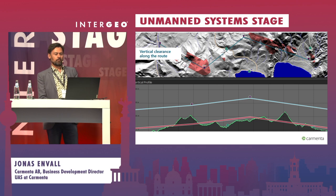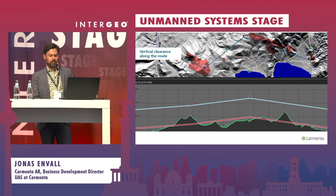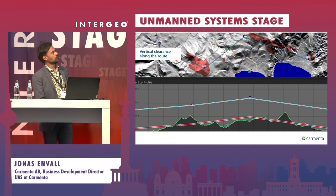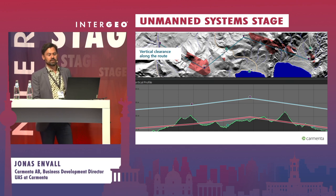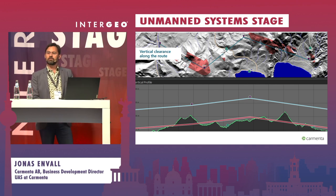The third example is vertical clearance along a route. The red areas in the upper picture show where the vertical clearance is below a certain threshold. In this way, potential hazards and obstacles can be identified and analyzed, and you can easily change the route so that it goes in a safe area and doesn't intersect any of the red areas.